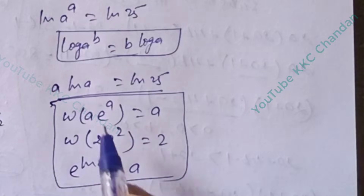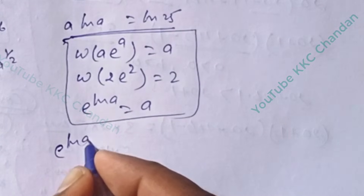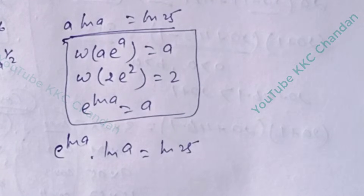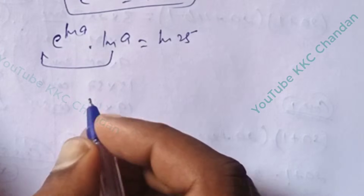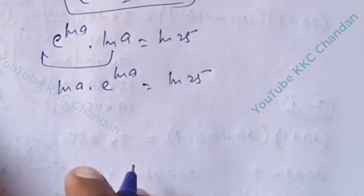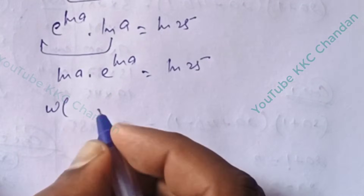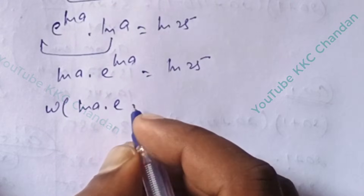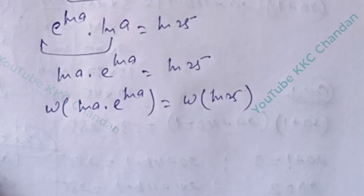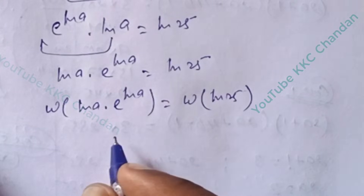See the next step: e^(ln a) · ln(a) = ln(25). Rearranging: ln(a) · e^(ln a) = ln(25). Now applying the W function to both sides: W(ln(a) · e^(ln a)) = W(ln(25)).